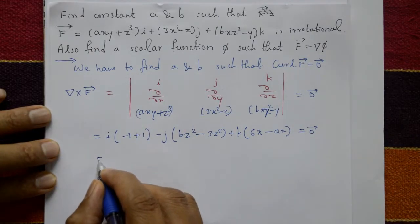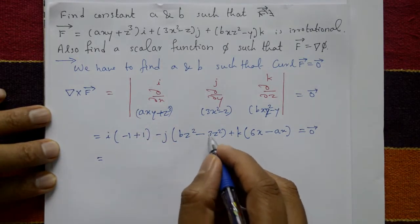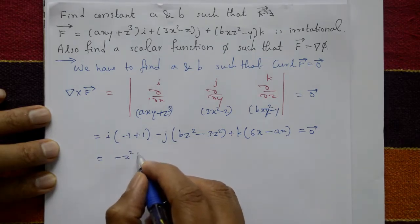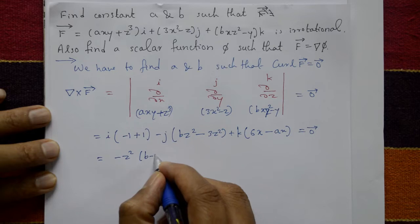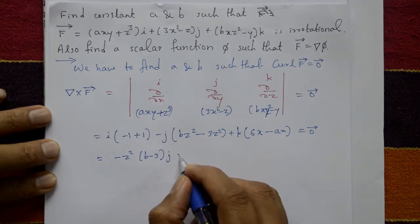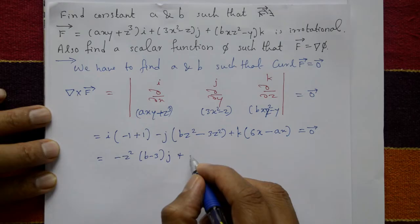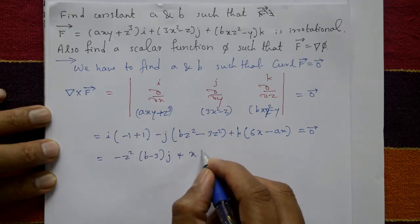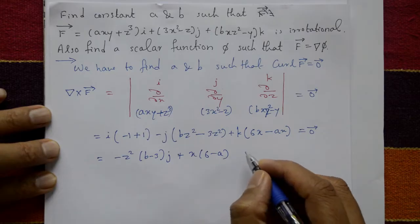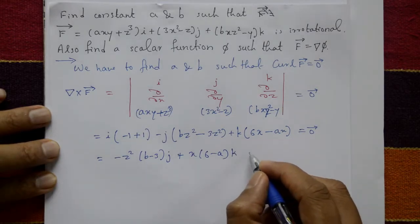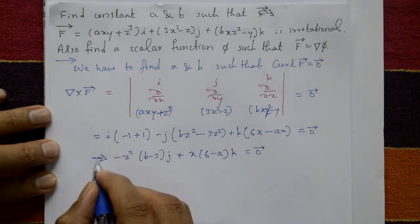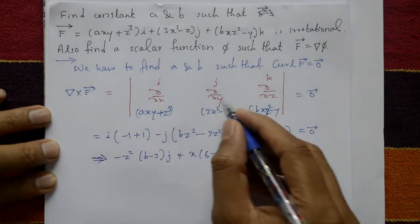The i component is zero. The j component has z² as a common factor with (b - 3) inside the bracket. The k component has x as a common factor with (6 - a) inside the bracket, all equal to zero.